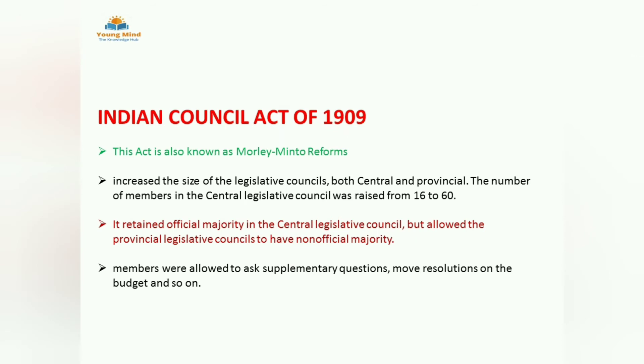The next is the Act of 1909, also called the Morley-Minto Reforms. Lord Morley was the then Secretary of State for India and Lord Minto was the then Viceroy of India. They increased the size of the legislative council both at the central and provincial level — before it was 16 members, now it rose to 60 members. People started to feel they were also participating. However, they retained official majority in the central legislative council, while in provincial legislative councils, non-official majority was allowed.